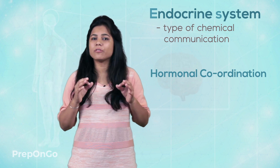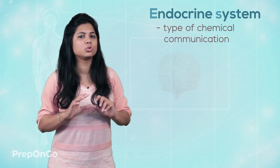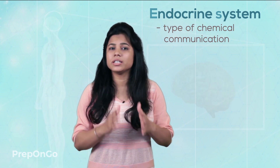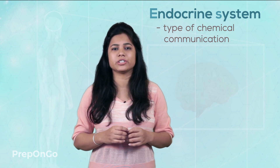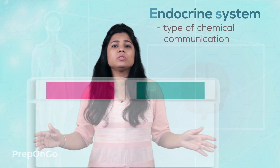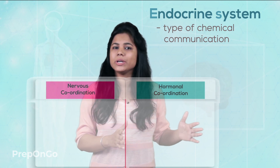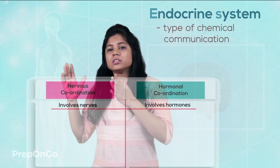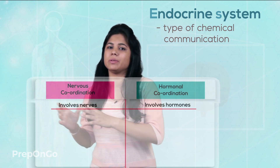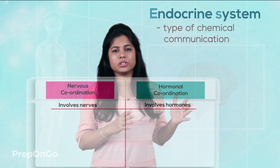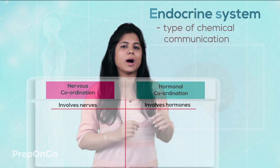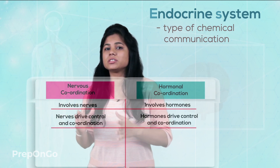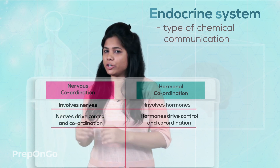In the previous video we have also seen that the electrical impulses are transmitted through the nervous tissue and we call this nervous coordination. So let's understand hormonal coordination and nervous coordination by drawing a table. On one side we have nervous coordination and on the other we have hormonal coordination. In nervous coordination, nerves are required to transmit the information to each and every part of the body. The CNS or central nervous system and nerves are important for control and coordination.